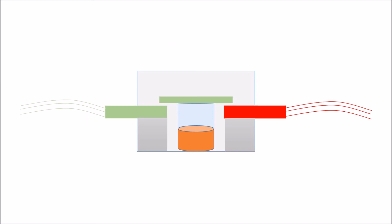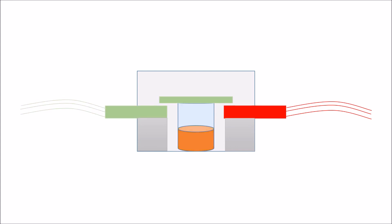Contactors are operated by energizing and de-energizing the electromagnetic coil inside them. When the coil is energized, the movable contacts are pulled towards the fixed contact and close the circuit.